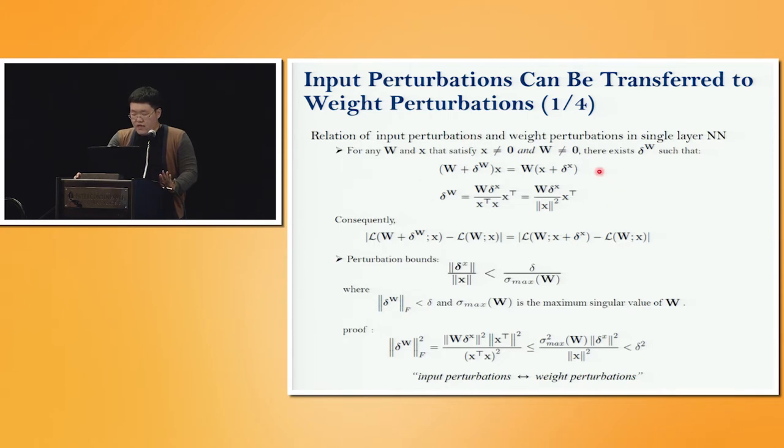Here, we show that input perturbations can be equivalently transferred to weight perturbations in deep neural networks. We first show this relation in single neural network and then we'll generalize this relationship to deep neural networks. If the input perturbation is given like this, there exists equivalent corresponding weight perturbations to make the same output of the neural network.